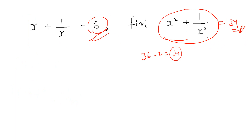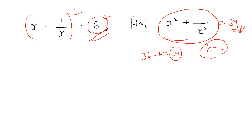We will show you the formula. K squared minus 2 is derived by squaring the whole expression. There is a clear formula for this.